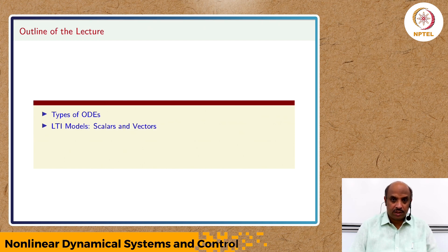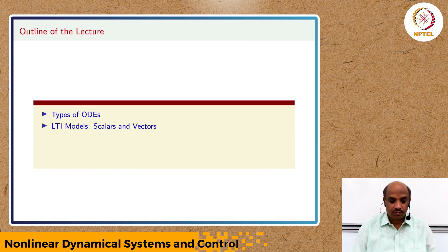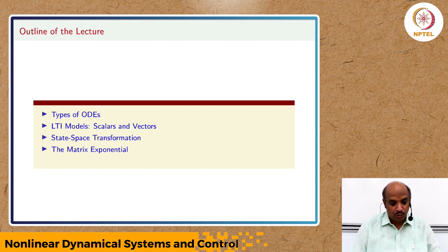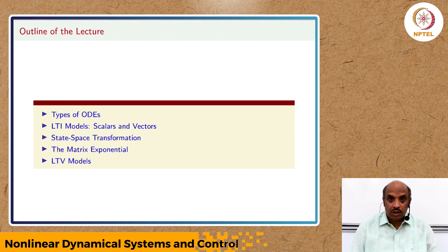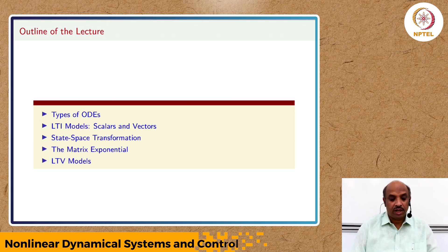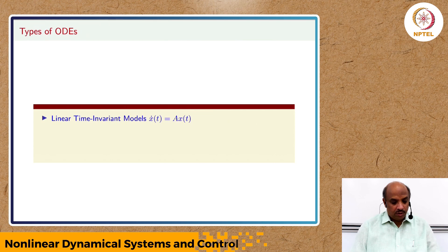Linear models are a special, simpler case, and we can actually say a lot about linear models. We will look at both scalar equations as well as vector equations, and there is a technique called state space transformation we will go through. We will take a concept called matrix exponential and end this lecture on linear time-varying models. Most concepts related to nonlinear systems will come in later lectures. We will broadly classify ODEs into four different types.